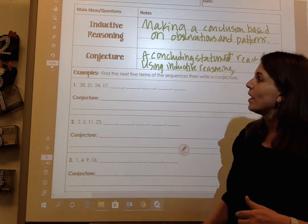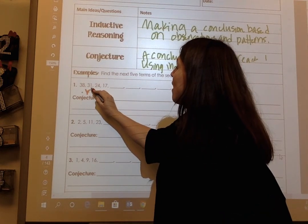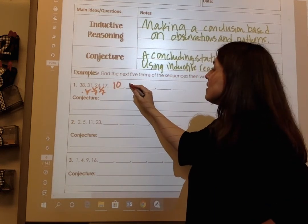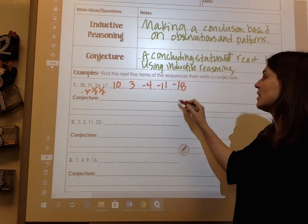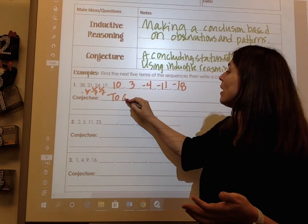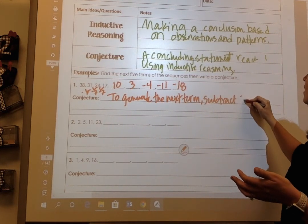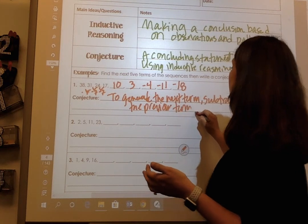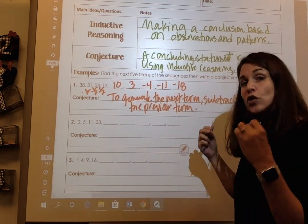So when would I use that in math? Here is a pattern. I have to establish what is that pattern and I need to make sure it fits the whole way through. So I'm subtracting 7, subtracting 7, subtracting 7. So it holds true. So then if I continue: 17 minus 7 is 10, 10 minus 7 is 3, 3 minus 7 is negative 4, negative 4 minus 7 is negative 11, and negative 11 minus 7 is negative 18. So I have established the next term in my pattern, and my conjecture is now going to say that to generate the next term, subtract 7 from the previous term. Now I have put into words what my pattern has said.